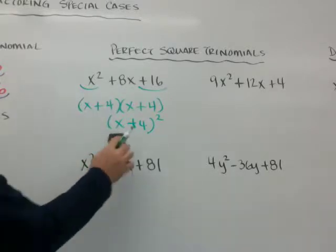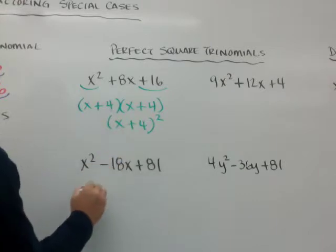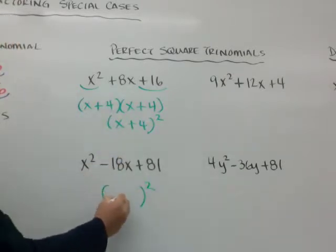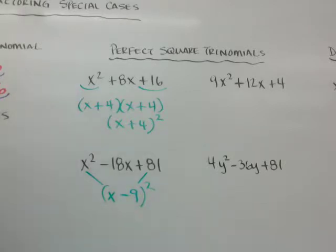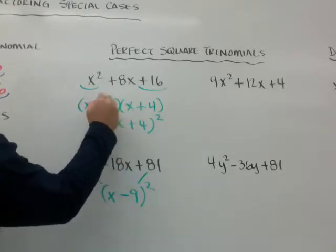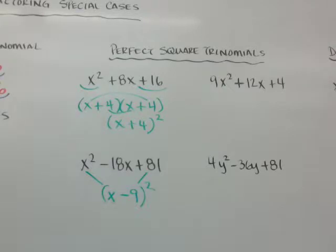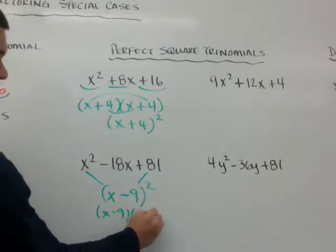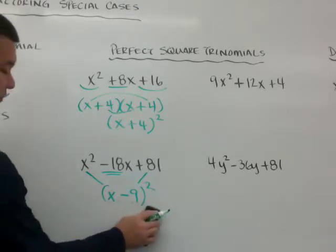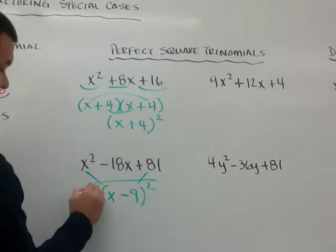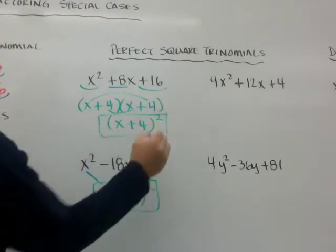Another way of doing it is the shortcut: put the square, put the sign here, take the square root of the first term — that goes here — and the square root of the last term goes here, which is 9. So it's just (x − 9) squared. But make sure when you FOIL it, the O and I of FOIL add up to the middle term. If I think of this as (x − 9)(x − 9), negative 9 and negative 9 give negative 18, so it checks out. My answers are (x + 4)² and (x − 9)².